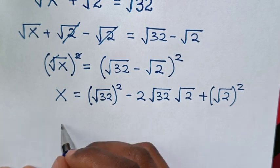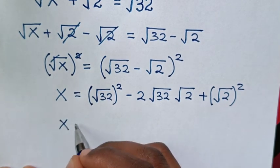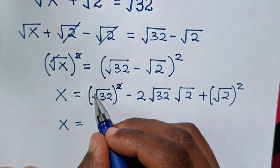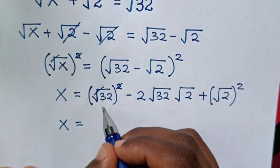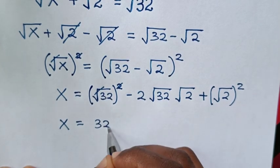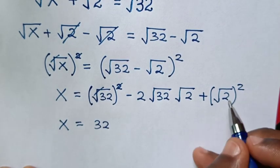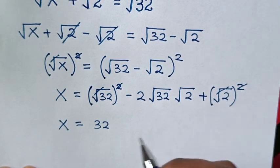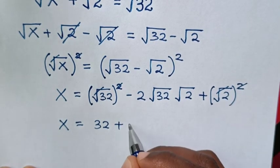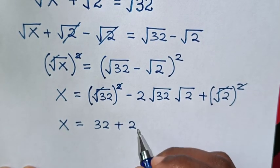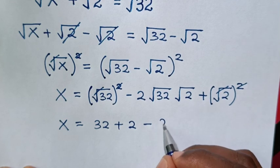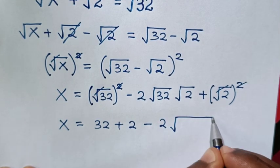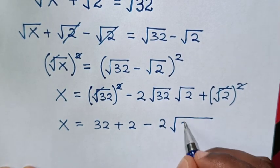Then in the next step, x is equal to 32 — since the square cancels with the square root — plus 2, then minus 2 times square root of 32 times 2.